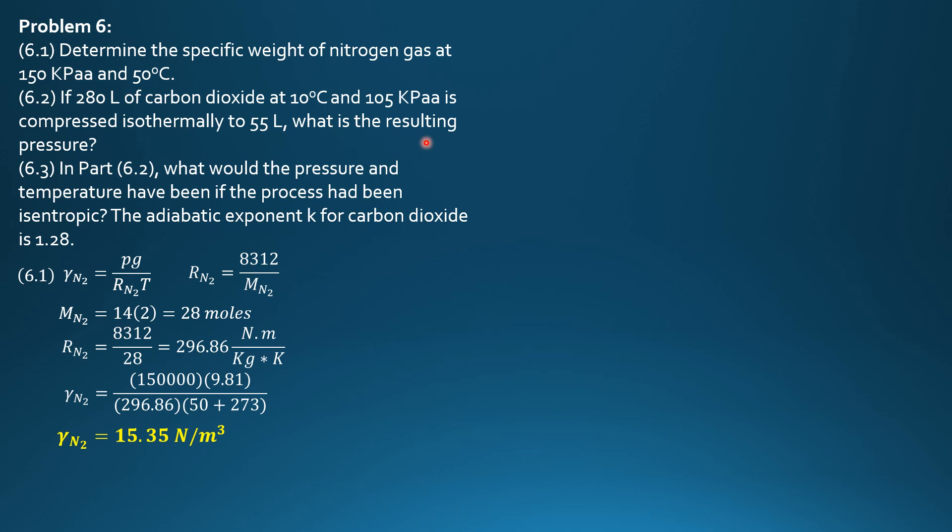So for isothermal process, Boyle's law, P1V1 equals P2V2. The temperature is still 10 degrees Celsius. So P1V1 equals P2V2, where V1 and V2 are volumes initially and finally. So 105 times 0.28 cubic meter equals P2 times 0.055 cubic meter. So the pressure is 534.5 kilopascals absolute.